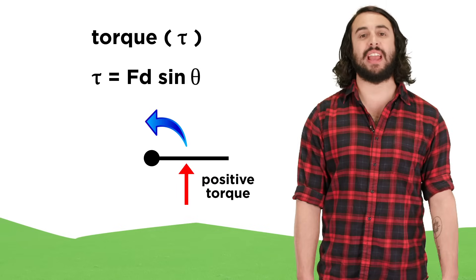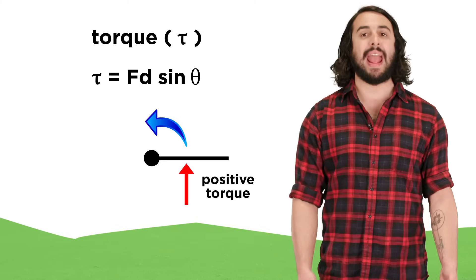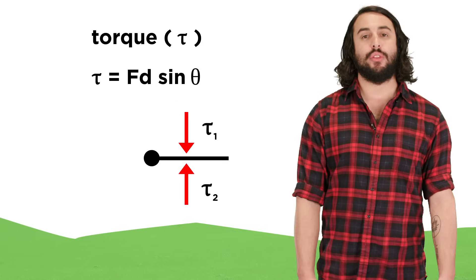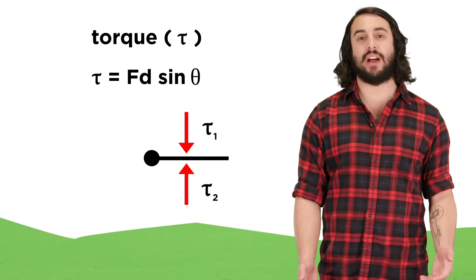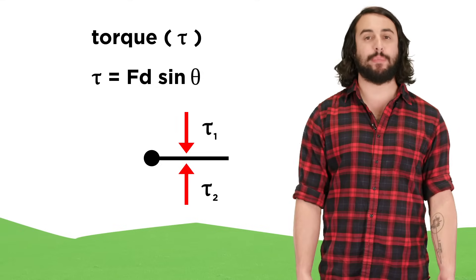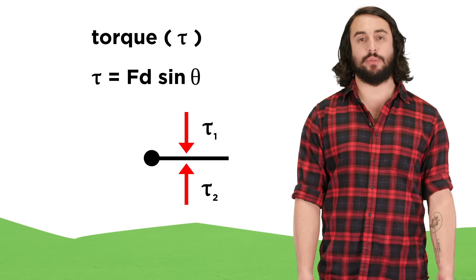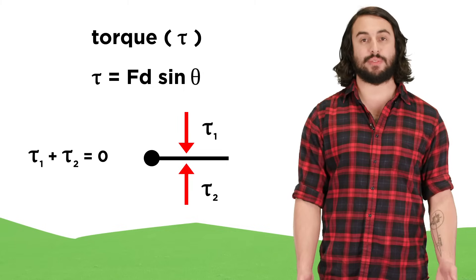By convention we will say that torque is positive if it results in counterclockwise rotation, and negative if it results in clockwise rotation, as we are by now familiar. This must be the case, because if two different forces act upon this object to produce opposite torques that are equal in magnitude, the object will not move, and the sum of the individual torques must be zero to reflect this fact.